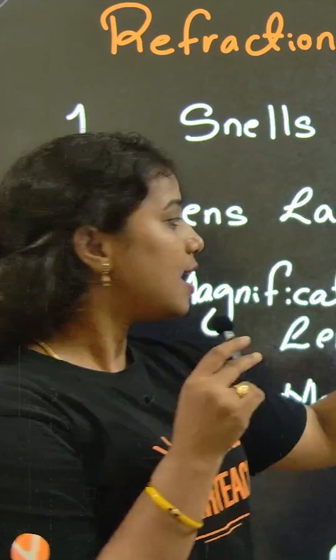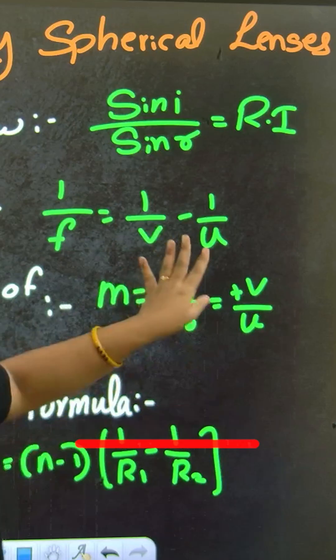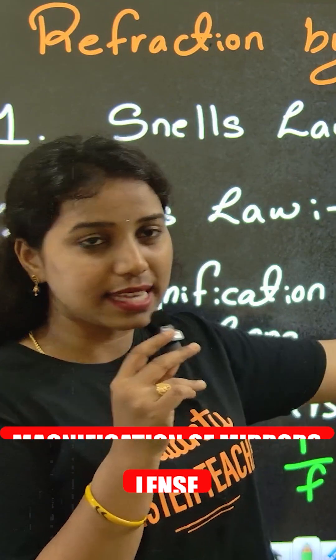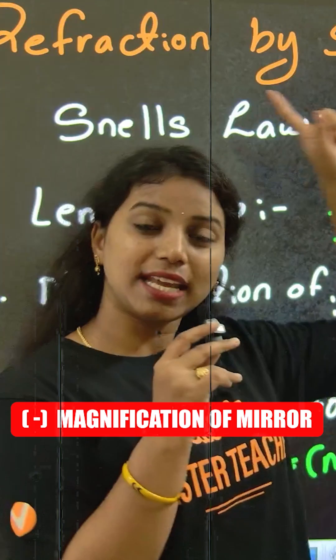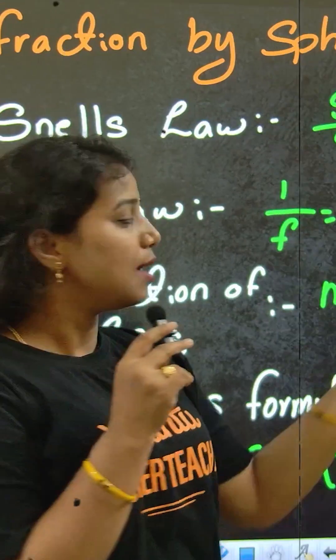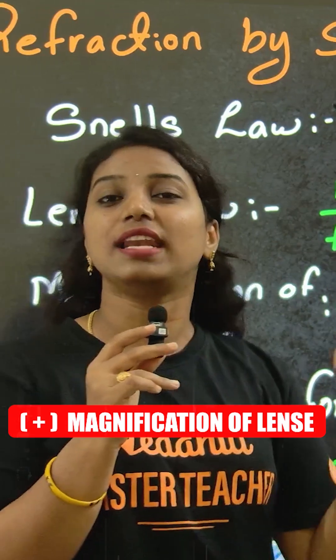Magnification of lenses. M equals h i by h naught. Here is magnification for mirrors and lenses. Same. But here is minus, it is magnification for mirrors. But here is plus, it is magnification for lenses.